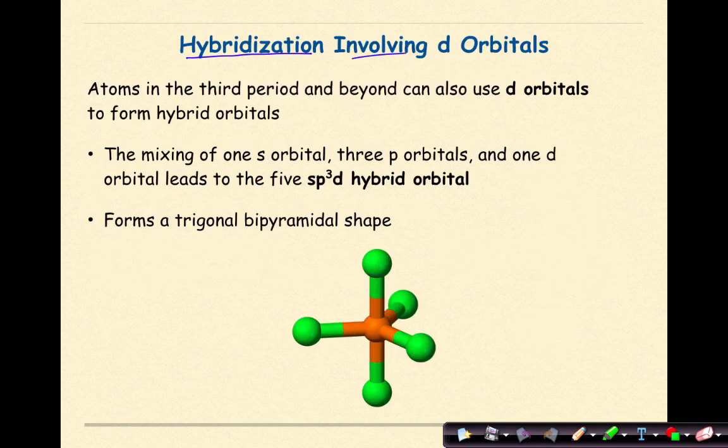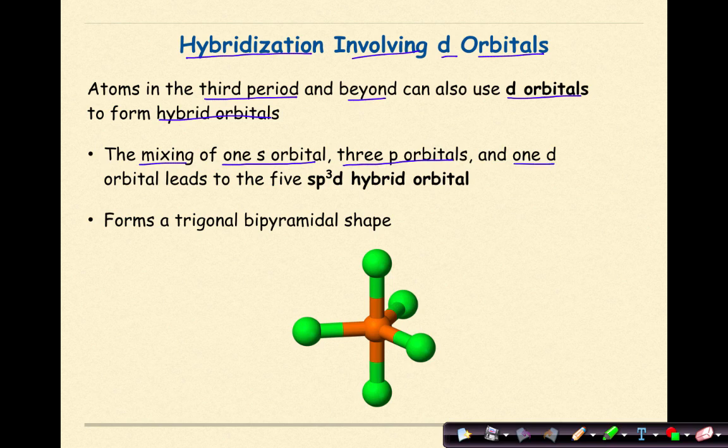Hybridization involving D-orbitals. Atoms in the third period and beyond can also use D-orbitals to form hybrid orbitals. The mixing of one S-orbital, three P-orbitals, and one D-orbital leads to the 5-SP3D hybrid orbital. This will form a trigonal bipyramidal shape.